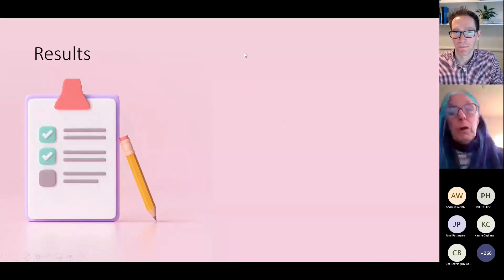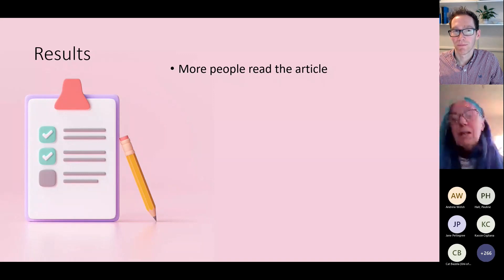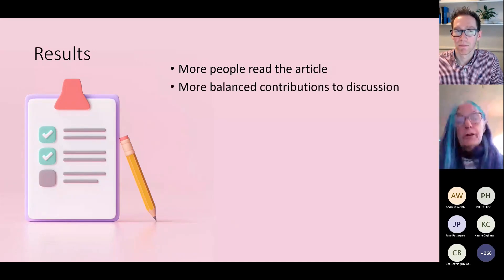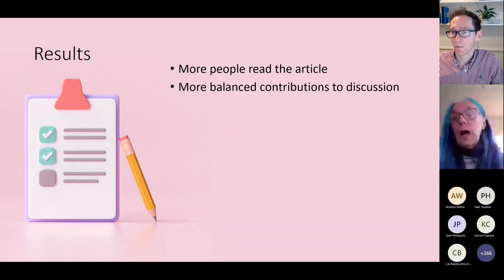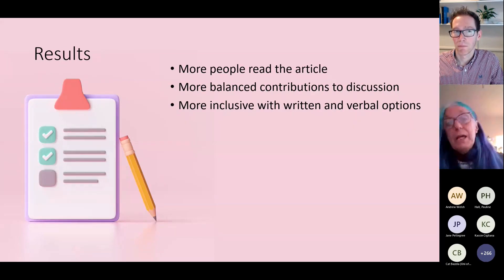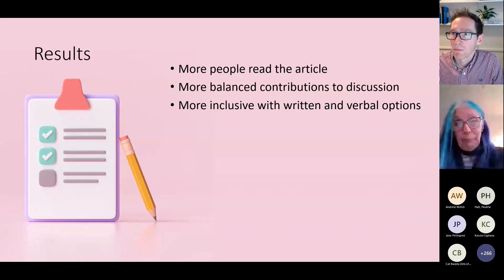This approach has results. I've taught many face-to-face seminars where a lot of people don't read the article — they sit back and want to listen to others explain it, and only the usual suspects contribute. With this method, more people read the article — almost all of them. I get much more balanced contributions, so I don't have the first two speakers dominating while everybody else goes into passive mode. I think this is because it's more inclusive to give students multiple means of contributing — that's the UDL, Universal Design for Learning, principle. They can write, speak, or do a combination of both, so almost everybody in that session contributes.